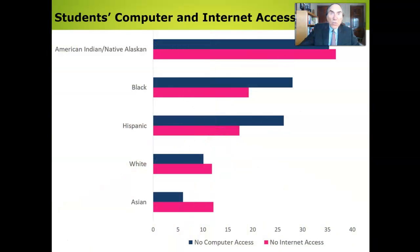Schools closed nationwide this past spring to prevent COVID-19 spread, meaning that more than 56 million K-12 students in the United States attended school online. During that time, more than 9 million school children faced difficulty completing online assignments, which exposed technology accessibility, equity, and participation issues.